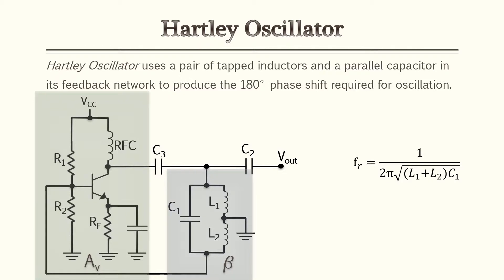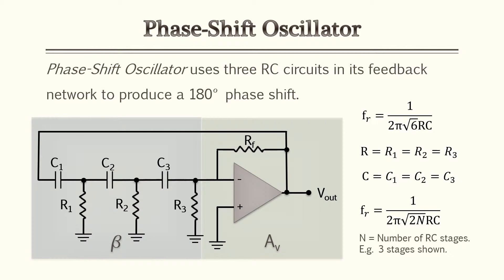The first oscillator we'll go over is the Hartley oscillator — a common oscillator found in most textbooks. The Hartley oscillator uses a pair of tapped inductors in parallel with a capacitor in its feedback network to produce the 180-degree phase shift required for oscillation. On the left is a BJT amplifier, and in the beta network we have inductors in parallel with a capacitor to find the resonant frequency.